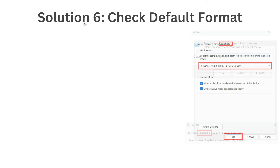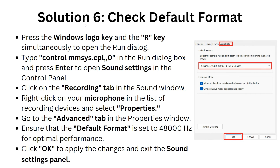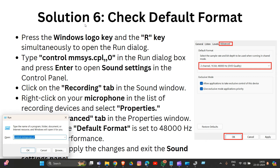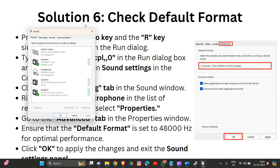That completes solution five. Now we are going to solution six: check the default format. Press Windows key + R and type mmsys.cpl to open Sound settings again.